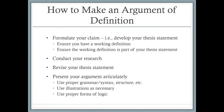How do you make an argument of definition? First, you formulate your claim — develop your thesis statement. Ensure you have a working definition: for whatever your argument of definition is, you need a working definition, such as 'abortion is murder' or 'abortion is not murder.' Ensure that working definition is part of your thesis statement — you need to state your definition in the thesis. Then you conduct your research, just like before. You revise your thesis statement, just like before. Then you present your argument articulately using proper grammar, syntax, and structure, with illustrations where necessary and proper forms of logic. In an argument of definition, you're stating your working definition in your thesis statement, giving your main points — for example, 'abortion is murder because...' and then you'd give your main points.